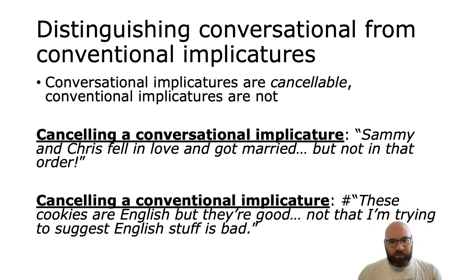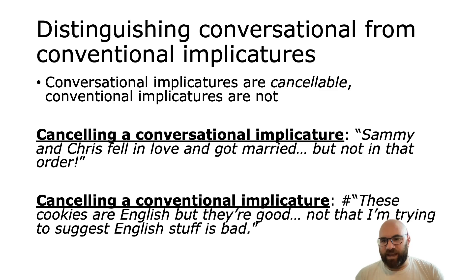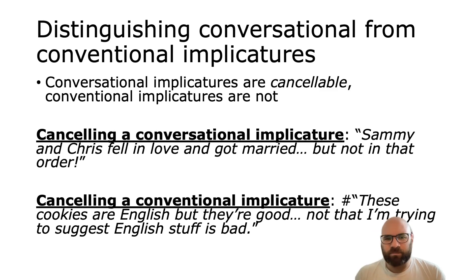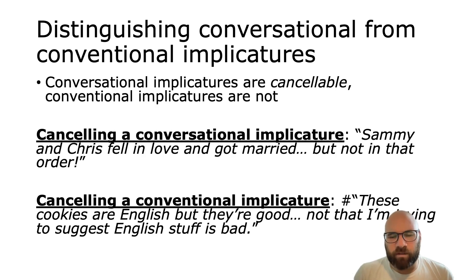Conventional implicatures are not easy to cancel. If we say 'these cookies are English, but they're good,' that implies English food is normally bad. If I try to cancel that by saying 'these cookies are English, but they're good — but I'm not trying to say English stuff is normally bad or make a contrast between those,' it sounds quite weird and wordy, basically like a contradiction. So this is one way we can tell the difference: conversational implicatures are easy to cancel, and conventional implicatures are not.